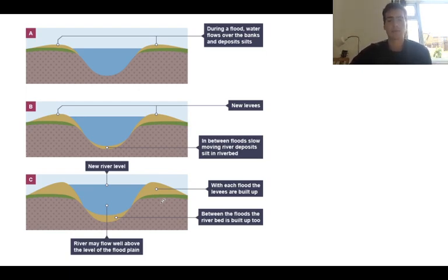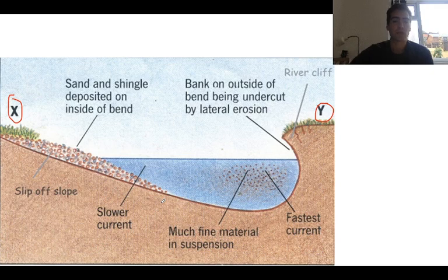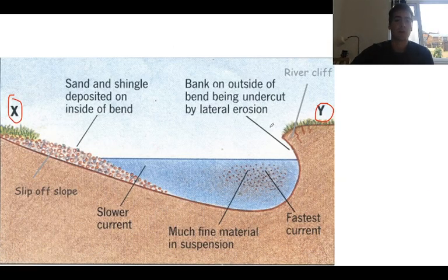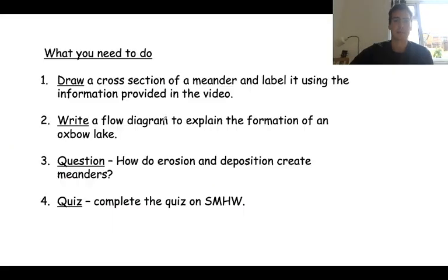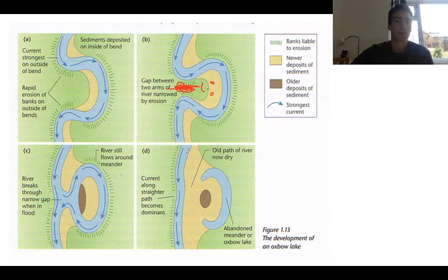That brings us to the end of this lesson on the lower course landforms. For your work: first, draw a cross-section of a meander and label it using the information from this video – draw a diagram similar to this, add these labels, and use the information discussed to make a really detailed diagram of a meander. Second, write a flow diagram to explain the formation of an Oxbow Lake, using the key terms labelled on the diagram.